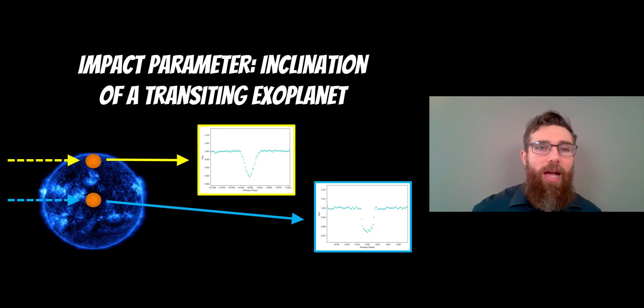Welcome to this video where we're going to have a look at something known as the impact parameter. For a transiting exoplanet, there's something known as the impact parameter which relates to the inclination of the orbit compared to how we're actually looking at it and how it's discovered.